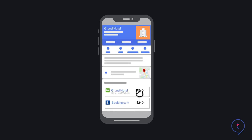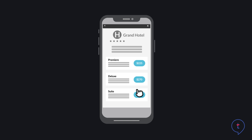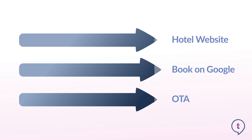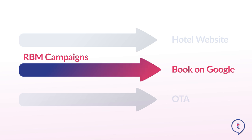When Book on Google is not activated, a user, after clicking on a price either from the hotel's website or OTA, will leave Google and continue the booking process on the website of the hotel or through the OTA. This decision is entirely up to the hotel whether to activate or not. However, any campaigns that are part of the Room Booking Module will force all users to be redirected to the Book on Google feature, without the possibility of redirecting them to the hotel's website.